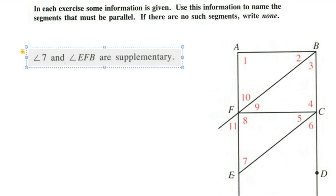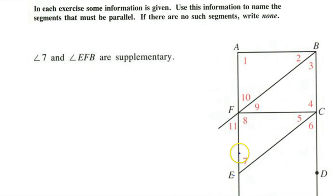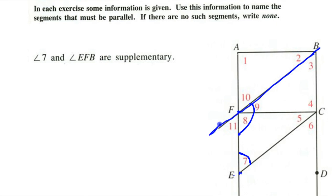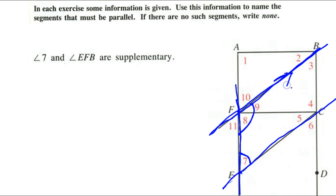What if we were told that angle 7 is supplementary to angle EFB? In other words, this angle plus this angle add up to 180. Well, these two angles are same side interior angles for this line and this line with this transversal. Therefore, FB has to be parallel to EC. So that's how you do those examples.